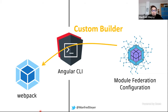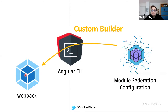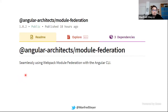We could write a custom builder that merges our Module Federation configuration into the Webpack configuration generated by the CLI, and then delegates to the default builder to build the application with Webpack. You could write this by hand — it's about 50 lines of code plus some boilerplate to make it work with the CLI. But you don't need to, because I've already done it. I've implemented the Angular Architects Module Federation builder, and it does exactly three things for you.